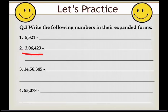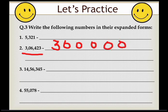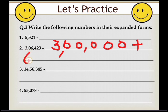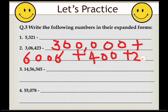The next number is 3,00,6,423. We write 3,00,000 plus — and remember, whenever a digit is 0 in the expanded form, do not write its expanded form, skip it — then 6,000 + 400 + 20 + 3. This is the expanded form of this number.